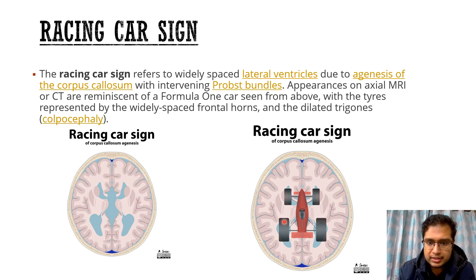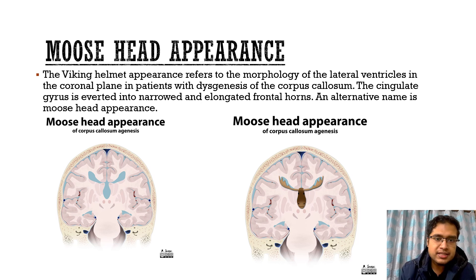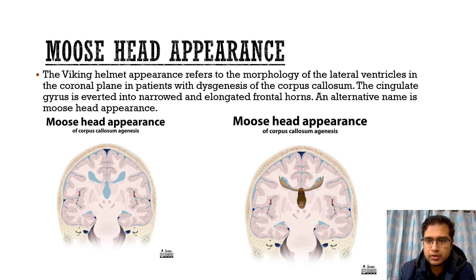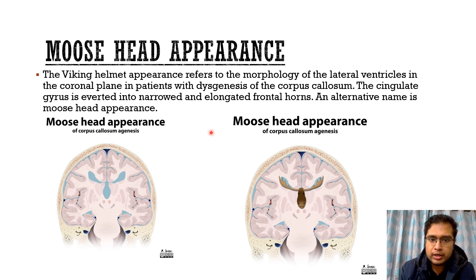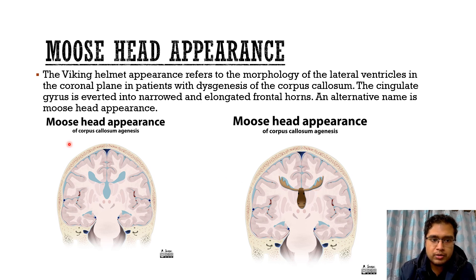These are the frontal horns and these are the dilated trigones of this racing car. The second important sign is the moose head appearance, also called the viking helmet appearance, which refers to the morphology of the lateral ventricles on coronal sections because of the dysgenesis of the corpus callosum. The cingulate gyrus is elevated into narrowed and elongated frontal horns, which appear like the horns of the moose head or the viking helmet.